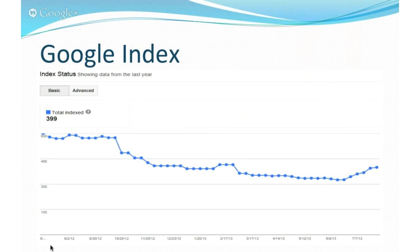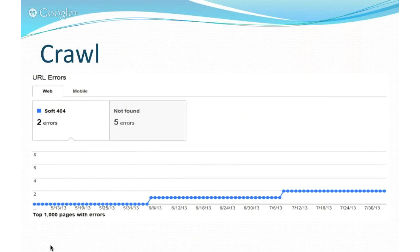The Google index tools include index status, content keywords, and remove URLs. Google looks at content keywords in Webmaster Tools differently than in AdWords or Analytics — it lists each word separately and shows the number of times the word is used and the number of variations found in the site. The crawl tools include crawl errors, crawl stats, fetch as Google, blocked URLs, sitemaps, and URL parameters. We'll dig deeper into each of these tools later.